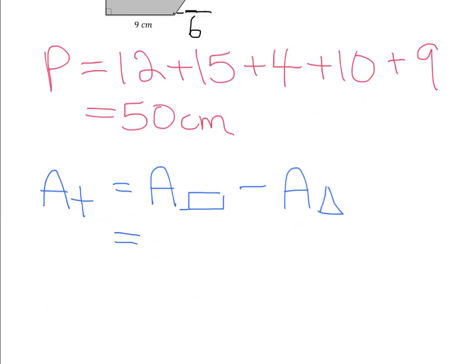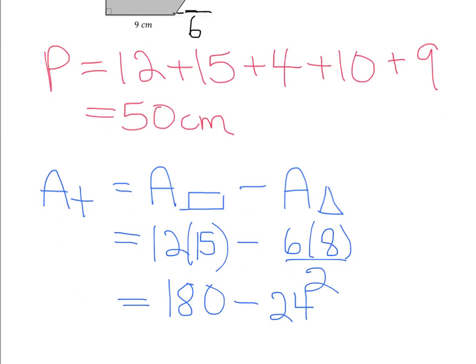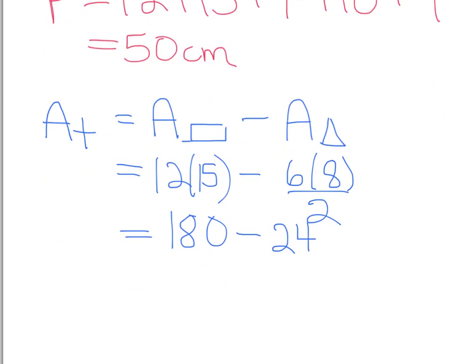We know that the area of the rectangle is 12 times 15. And we know that the area for the triangle is base, which is 6, times the height, which is 8, all divided by 2. And this time then, when I do 12 times 15, I'm going to get 180. And this time, I'm going to subtract away the triangle, which is of course 24. So when I do that subtraction, I then end up with 156 centimeters squared, because we're talking about an area here.